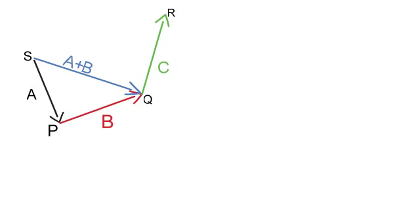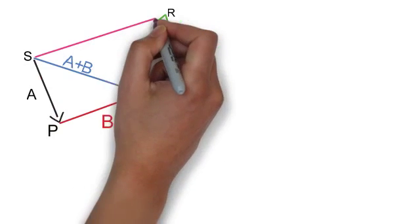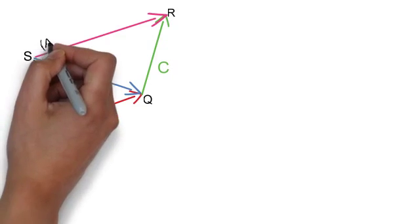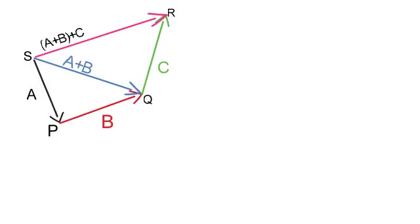Now look at triangle S, Q, R. In this triangle, the side SR will be the vector sum of SQ and QR. The side SQ is equal to vector a plus vector b, and the side QR is equal to vector c. Therefore, the side SR will be equal to vector a plus vector b plus vector c.